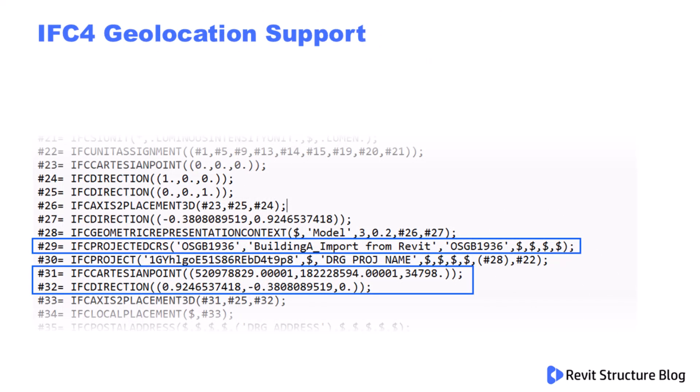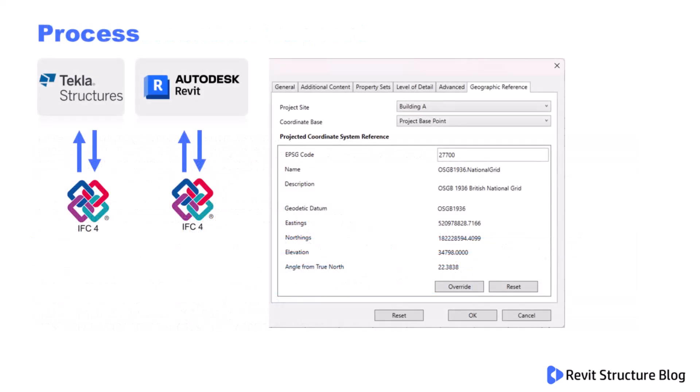To do this we're going to make use of IFC4. IFC4 now has geolocation support, so this doesn't just use latitude and longitude but uses proper coordinate systems, understanding things like OSGB 1936 or WGS84, making sure that we can accurately position buildings in the real world and also match things like project rotation or true north. The general process will be to export IFC4 from Tekla and Revit with the correct settings.